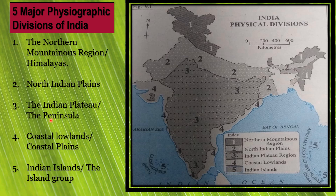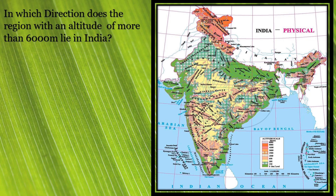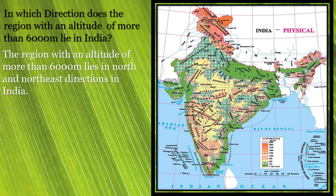We now move on to page number 14 of our textbook, figure 3.1 — the physical map of India. The first question: in which direction does the region with an altitude of more than 6000 meters lie in India? The mountains more than 6000 meters in height are shown in dark brown and gray color. The answer is the region with an altitude of more than 6000 meters lies in the north and northeast directions in India.